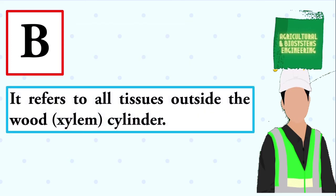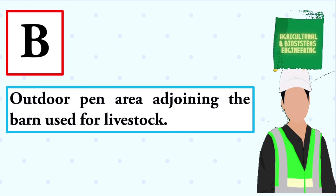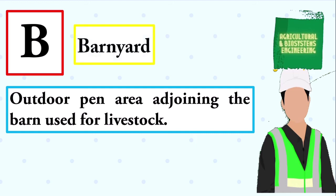Exchangeable bands on one or both sides of coulter and single or double disc blade furrow openers. The answer is: bands on disc opener. Water leaving a stream channel during rising stages of stream flow, most of which returns to stream flow during falling stages. The answer is: bank storage. It refers to all tissues outside the wood or xylem cylinder. The answer is: bark. It is an enclosed covered building for the keeping and care of livestock and/or storage of roughage. The answer is: barn.